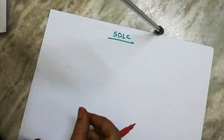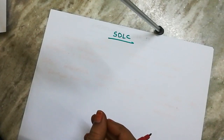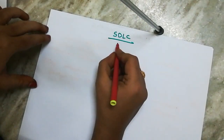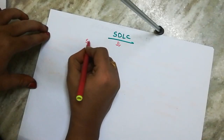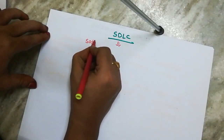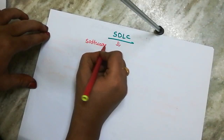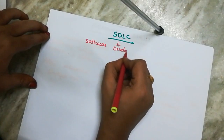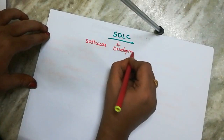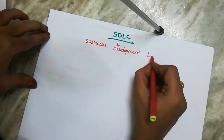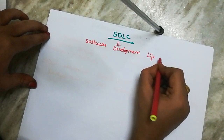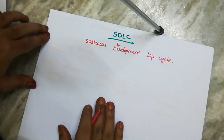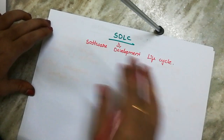So I am going to tell you the topic is SDLC. So what is SDLC? What does SDLC mean? SDLC means Software Development Life Cycle.